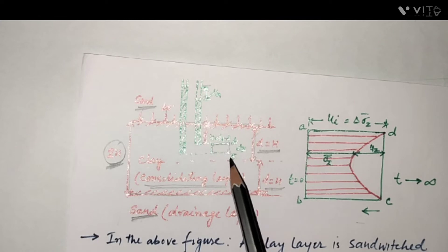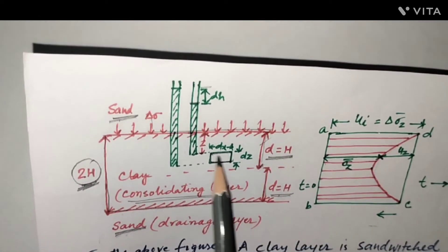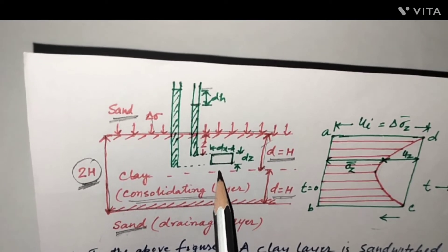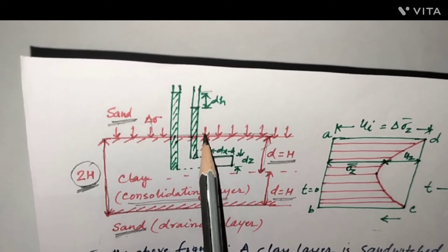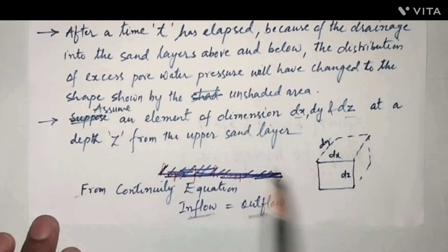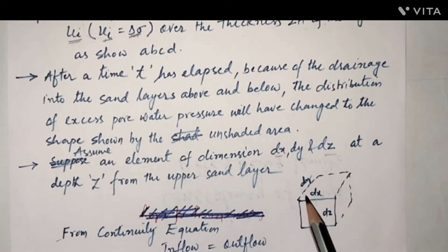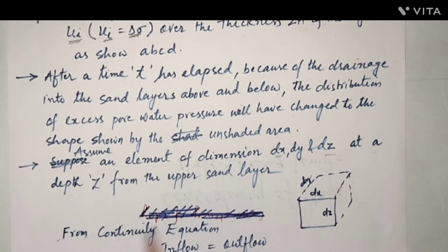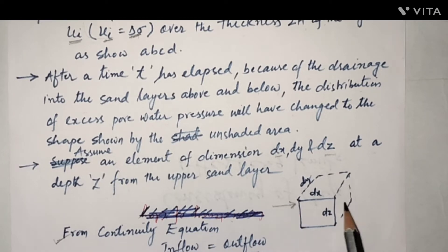Consider a small element of size dx·dy·dz at a depth z from the upper sand layer. From the continuity equation, the inflow will equal the outflow from this small element.